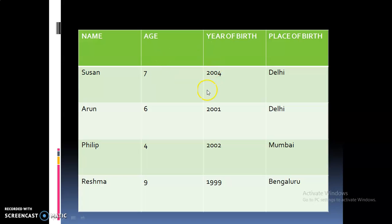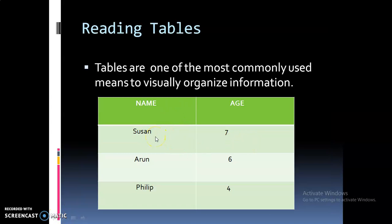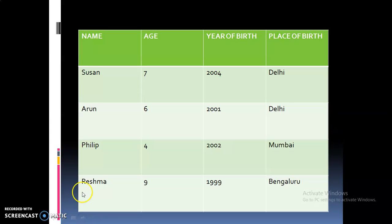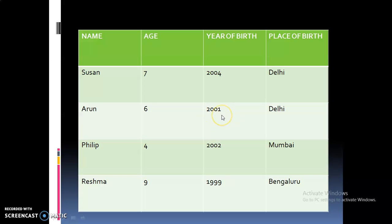Now we can examine a second table which provides information about the year of birth and place of birth. In the previous table, only the name and age of the person were provided, but if you need more details, you can add more columns and rows. We can interpret the table to find answers to exam questions. For example, if the question is 'Which year was Aaron born?', you can look at the name Aaron and the year of birth given — the answer is 2001.